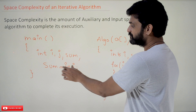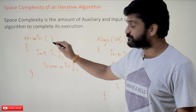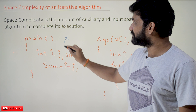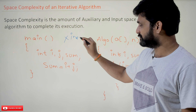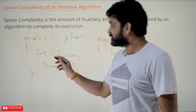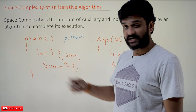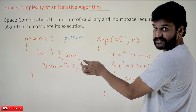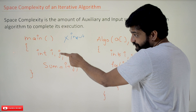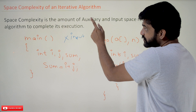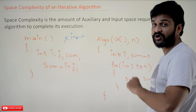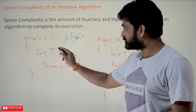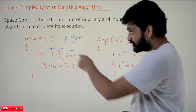For example, consider this simple algorithm that sums two numbers. Here we don't have any input space — the input space is not there. The other space required is what we call auxiliary space: the amount of space required for the program to get executed.